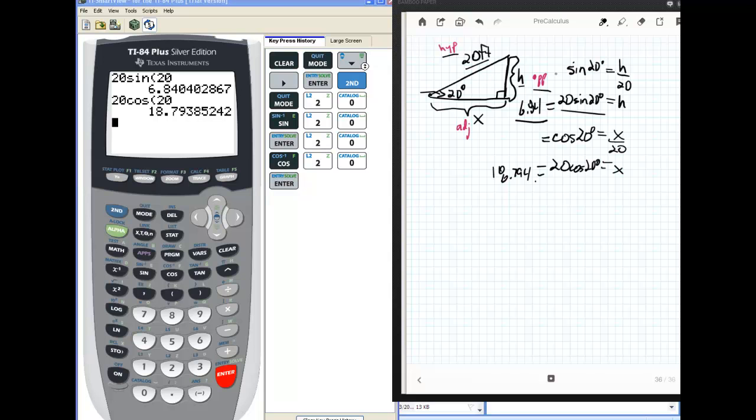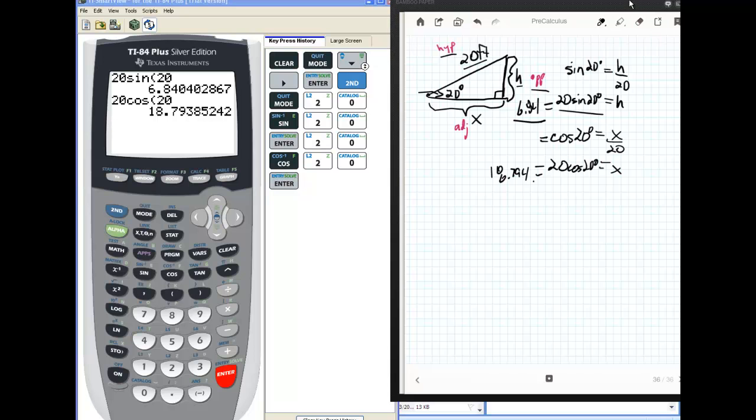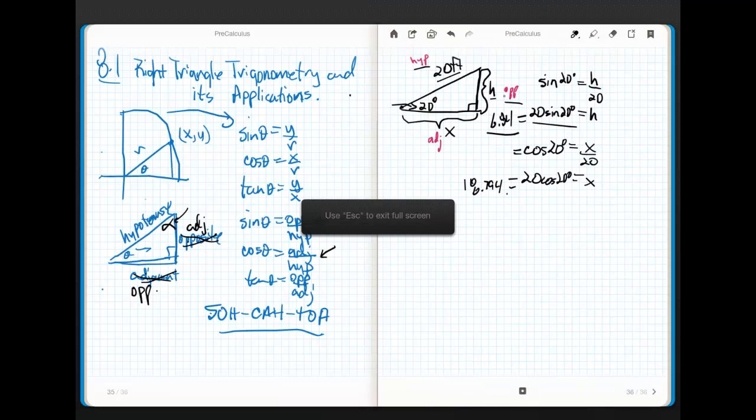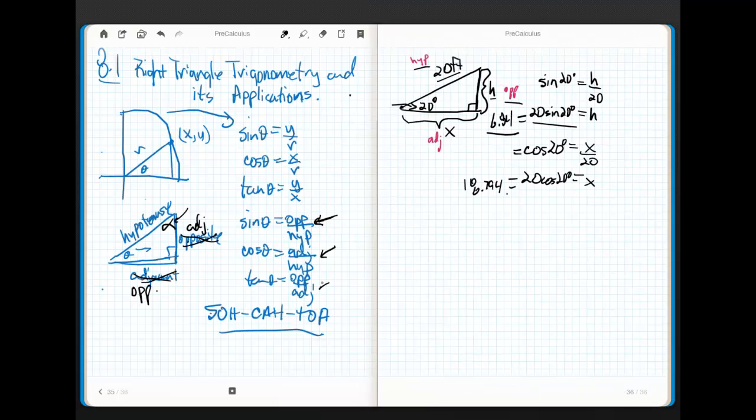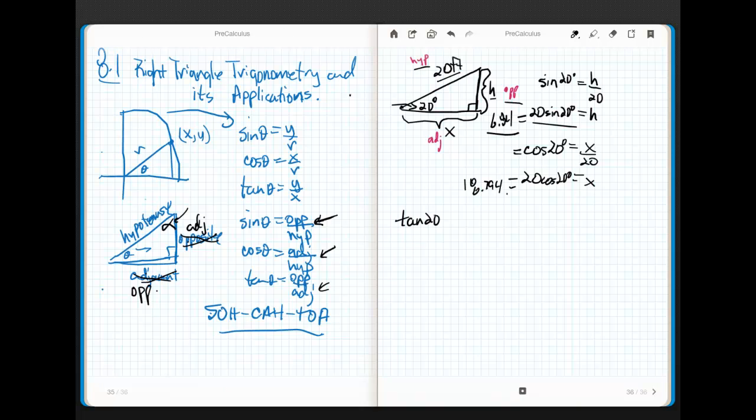But, if I want to use a ratio that deals with opposite and adjacent, can't I use tangent? I can use tangent, right? Opposite over adjacent. Let's see what that would look like. I know that the tangent of 20 degrees is equal to the opposite, which we had just solved as 6.84 divided by x. In a puff of algebra, x equals 6.84 divided by the tangent of 20 degrees.